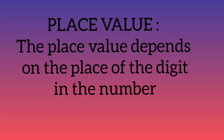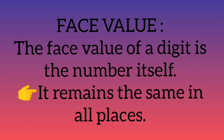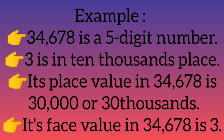One more topic: place value and face value. The place value depends on the place of the digit in the number. For example, in 34,678 — a 5-digit number — 3 is in the 10,000 place, so the place value of 3 is 30,000.